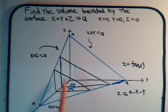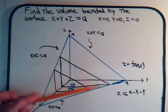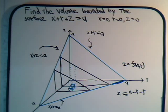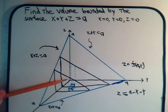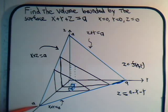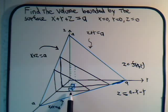Summing up the columns in the y direction gives us the volume of a vertical slice. Then we add up the volume of all the vertical slices, placing them one after the other, starting at x equals zero and continuing until we get to x equals a. The third summation is in the x direction.